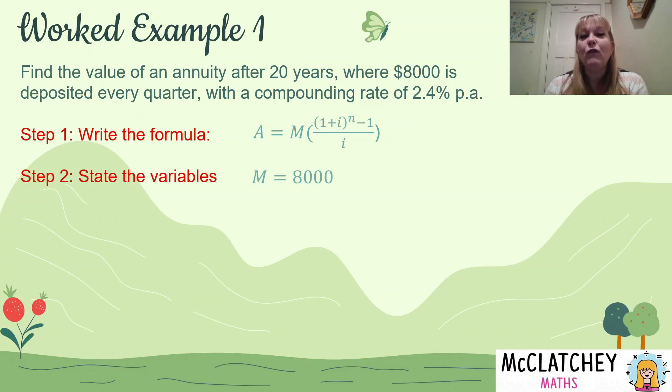So firstly, M is our regular payment. It's a payment per quarter of $8,000. So that's the value of M. i, as usual, we need to convert that firstly to a decimal by dividing by 100. So we take 2.4 divided by 100 gives us 0.024. And then we need to divide that by 4 because it's 4 quarters in a year. That gives us an interest rate of 0.006.